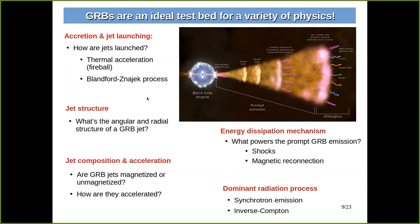What makes GRBs so interesting is that they are an ideal test bed for a variety of physics. There are many open questions: What is the accretion and jet launching mechanism — is the jet driven by thermal acceleration in a fireball, or by the Blandford-Znajek process as in AGN jets? What is the angular and radial structure of GRB jets? Are these jets strongly magnetized or unmagnetized? What is the dissipation mechanism — shocks or magnetic reconnection? And what is the dominant radiation mechanism — synchrotron emission or inverse Compton? These are all questions that my work tries to answer.